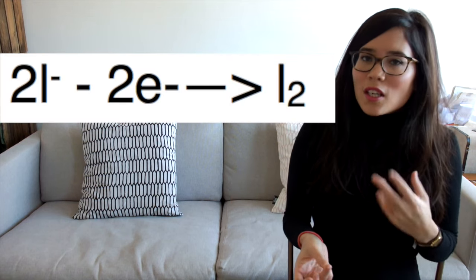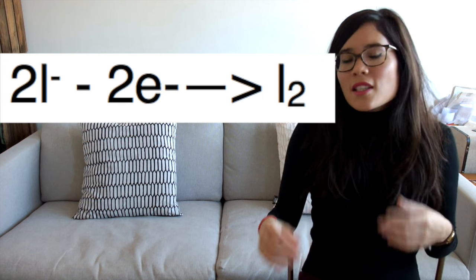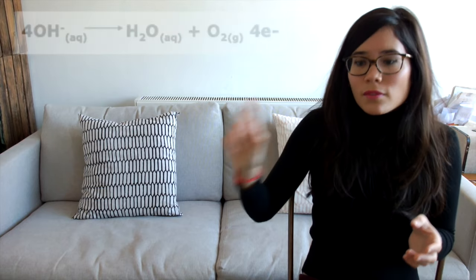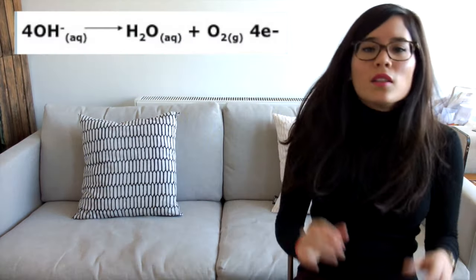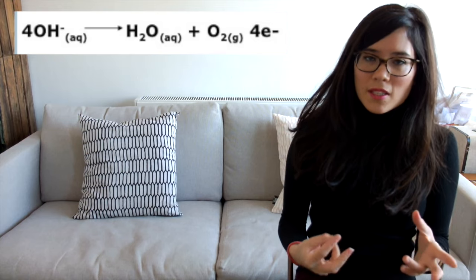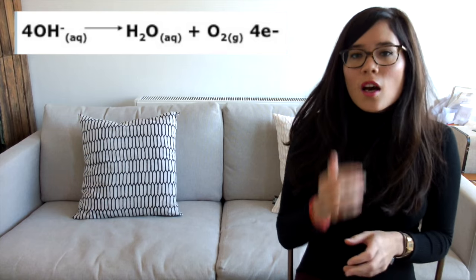Let's quickly touch on oxygen if it forms. This is the equation you need to learn in order to show that oxygen forms, and you'll see that it does make sense in terms of the charges. So that's really everything I wanted to say about electrolysis — it is a complicated topic. Have a look at some past exam questions just to see what sorts of questions they ask. Don't forget to subscribe to my channel, and I'll see you next time.